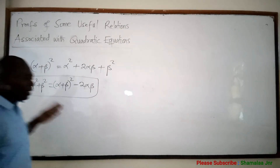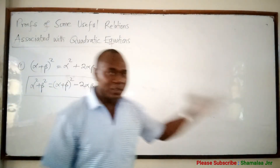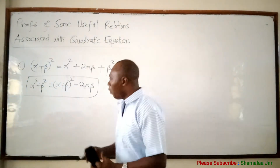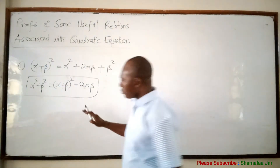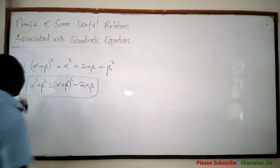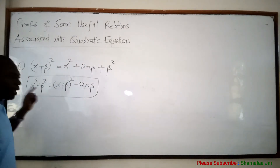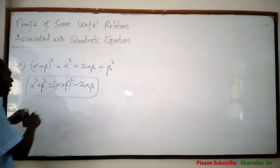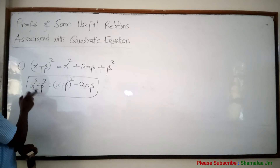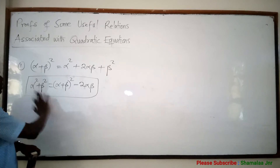If alpha and beta are the roots of a given quadratic equation and you are asked to form a quadratic equation whose roots are alpha squared and beta squared, when you are looking at the sum of roots, this relation — alpha squared plus beta squared equals alpha plus beta all squared minus 2 alpha beta — will be needed.